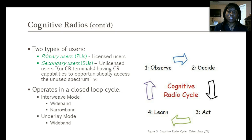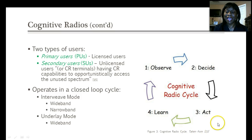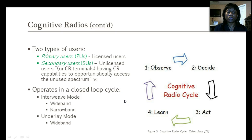Cognitive radio is concerned with two types of users: primary users, who are the licensed users, and secondary users, who are the unlicensed users and who with the cognitive radio system will be able to access available licensed spectrum. Cognitive radio operates within a closed loop cycle where its basic functions are to observe, decide, act, and learn its environment, operating under two modes: interweave mode and underlay mode.